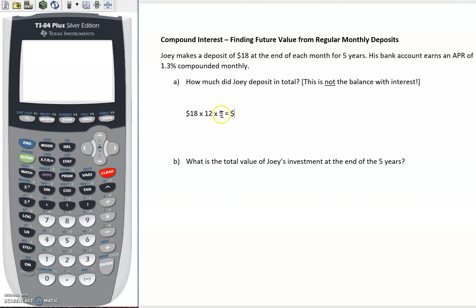So we can just punch in $18 times 12 times 5. So Joey over the course of this time put in a total of $1,080.